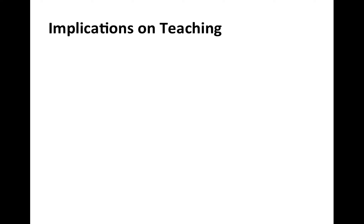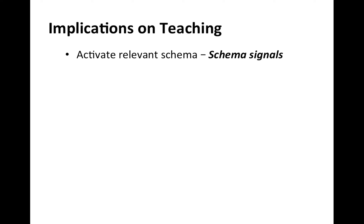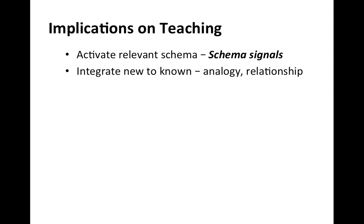Finally, what are the implications on teaching? First, you need to activate learners' relevant schema — this is called schema signals. By doing so, you are guiding your students as to what existing schema they need to activate and where to place this new information. Second, integrate new information to prior knowledge so that they can utilize existing knowledge when creating a new schema. You can do that by providing an analogy or explaining the relationship between the new and the known information.